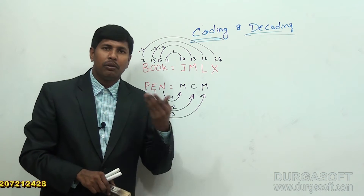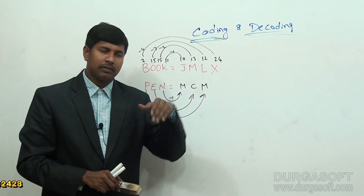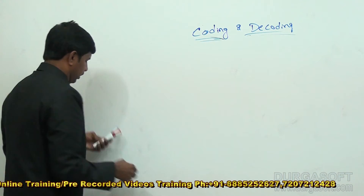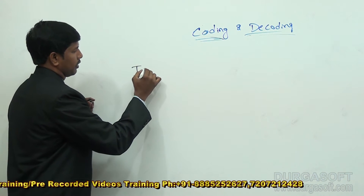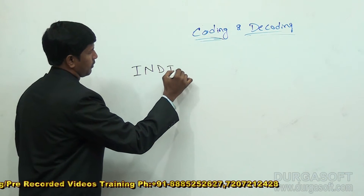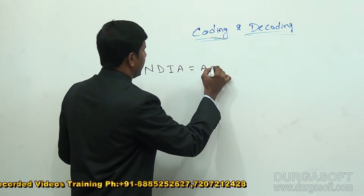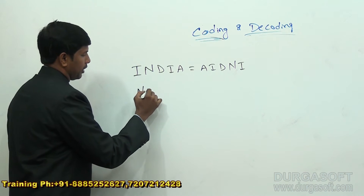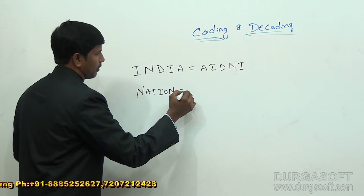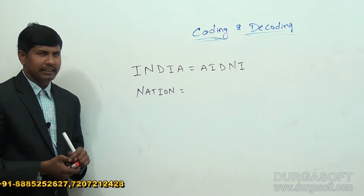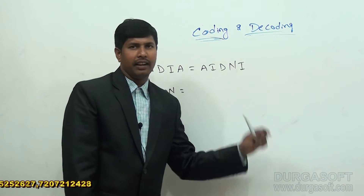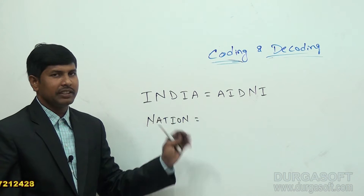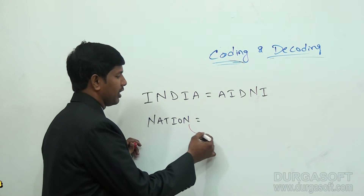Unlike value-based coding, sometimes the coding technique depends upon the position of the letters. For example, suppose India is coded as A, I, D, N, I. From this, what we can understand is the word India is replaced by the code A-I-D-N-I — we are writing the alphabets in reverse order.